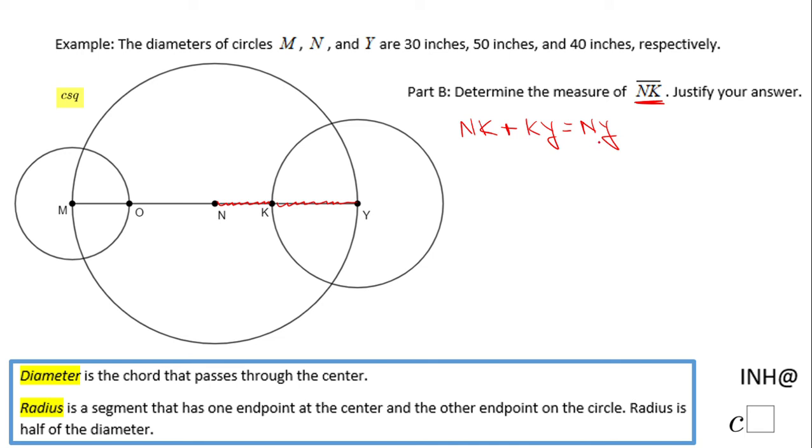And NK is the segment we need to find out. KY, if you take a look, is the radius of circle Y, so it's half of 40 inches. And NY is the radius of circle N, so it's half of 50.